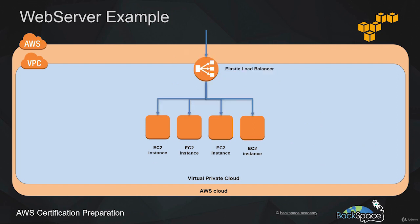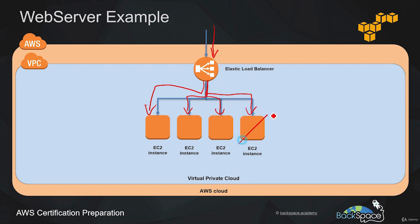That is where Elastic Load Balancing comes in. It can receive traffic from end users and distribute that traffic to an available EC2 instance. A request will come in, it will be distributed to an available EC2 instance, and the load will be balanced across those instances. If one EC2 instance becomes unhealthy, it will fail a health check and the Elastic Load Balancer will no longer send traffic to that unhealthy instance.